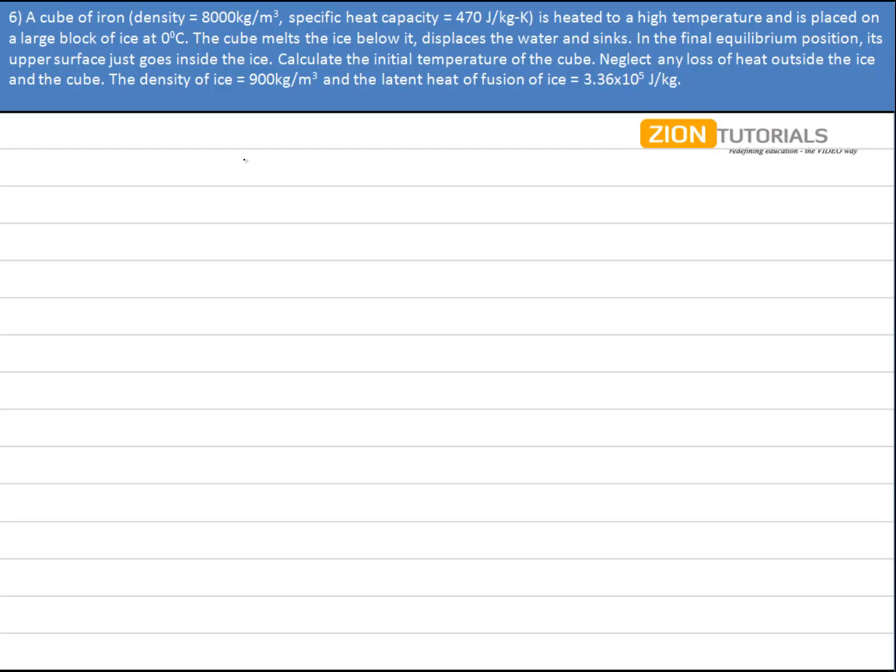The cube melts the ice below it, displaces the water and sinks. In the final equilibrium position, the upper surface just goes inside the ice. Calculate the initial temperature of the cube and neglect any losses of heat outside the ice and the cube.